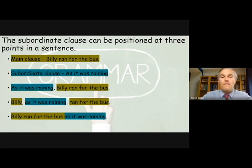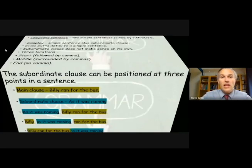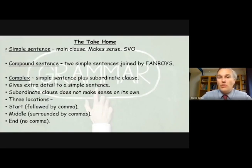So at the start you need a comma following it, in the middle if it's embedded it's going to be surrounded by commas, and if it's at the end it doesn't need a comma at all. So what's our takeaway today? Simple sentence, also known as a main clause, it makes sense on its own and contains a subject and a verb and sometimes an object. A compound sentence: two simple sentences, two main clauses joined together by those lovely FANBOYS. And a complex sentence is a simple sentence plus a subordinate clause which gives extra detail, and the subordinate clause doesn't make sense on its own and can come in three locations: at the start followed by a comma, middle surrounded by commas, and at the end without a comma. Thank you very much.